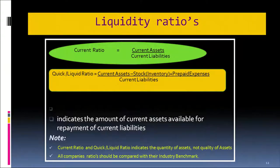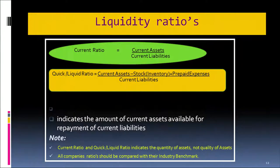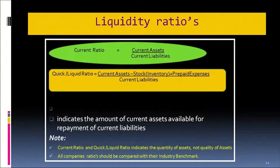The liquid ratio changes the numerator: it will be current assets minus inventories minus prepaid expenses, divided by current liabilities. This defines liquidity more directly than the current ratio. Most firms calculate the quick ratio after the current ratio because it gives a better picture of liquidity, having deducted inventories and prepaid expenses — the slower-moving current assets.